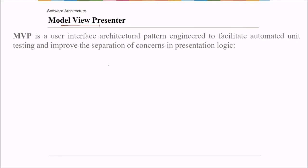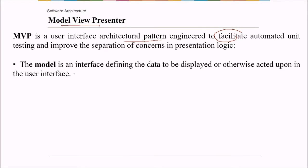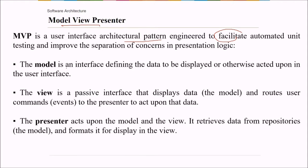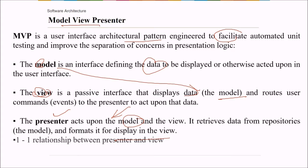What is model view presenter? MVP is a user interface architecture pattern engineered to facilitate automated unit testing and to improve the separation of concerns in presentation logic. The model, the view, the presenter. So model is an interface defining the data to be displayed or otherwise acted upon in the user interface. The view is a passive interface that displays data, that is the model, and routes user commands to the presenter to act upon that data. The presenter acts upon the model and the view, these two. It retrieves data from repositories, that is the model, and formats it for displaying the view.